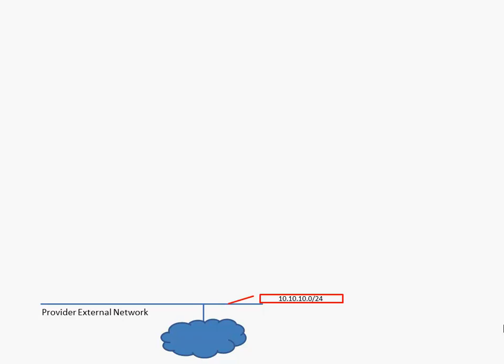When you are creating a provider external network you have to assign an IP range to it, and you can create a static pool within vCloud Director. These addresses are handed out to virtual machines that are connecting to the provider external network, and it can be done by customization. So when a virtual machine is powered on, the IP address is automatically configured within the virtual machine in the vApp, and then the virtual machine can communicate to the outside world.